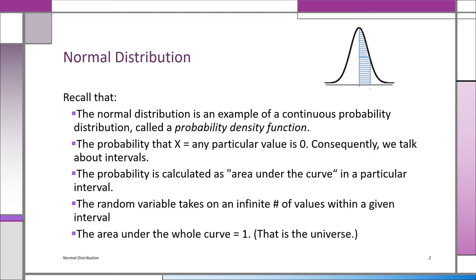You'll also remember that the way the formulas for continuous probability distributions are constructed, the total area under the curve is equal to one. So if we want to take the shaded area and divide by the total area, that's just dividing by one, which makes our lives a little bit easier.